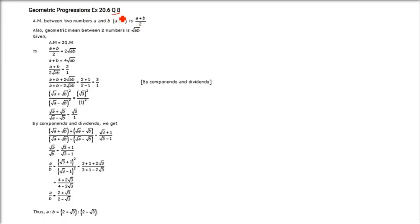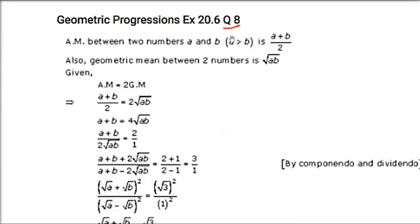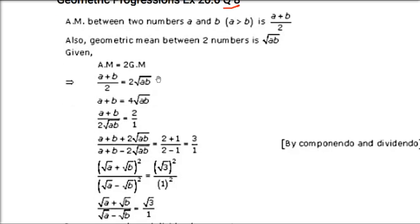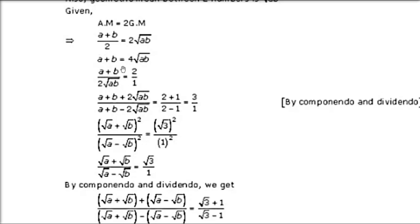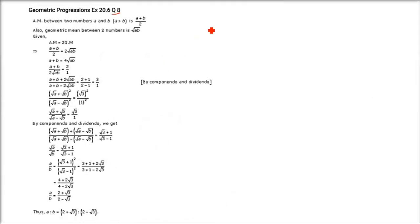If the AM of two positive numbers a and b (a > b) is twice their geometric mean, prove that a:b = (2+√3):(2−√3). Given AM = (a+b)/2 and GM = √(ab), the condition is (a+b)/2 = 2√(ab), so a+b = 4√(ab). Dividing both sides by 2√(ab): (a+b)/(2√(ab)) = 2/1. Now applying componendo-dividendo: (a+b+2√(ab))/(a+b−2√(ab)) = 3/1.